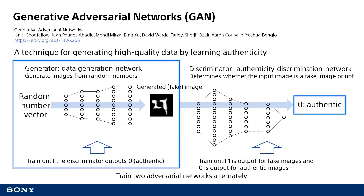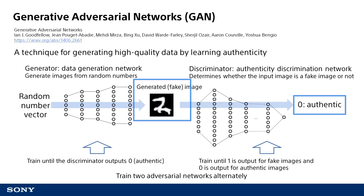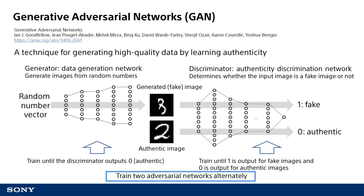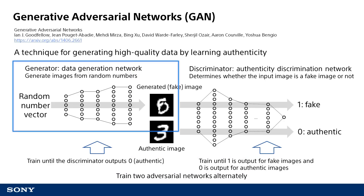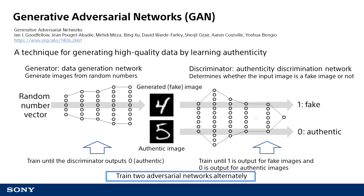Then we train the generator to output images that the discriminator determined to be authentic. This results in the generator being able to generate images that cause the discriminator to make false determinations, even though the discriminator is now able to do its job much better. By repeating this process several times, the generator will gradually be able to generate images of realistic handwritten digits indistinguishable from real images. This is the framework by which we train image generation systems. Because of this iterative process in which performance is continually improved by making the networks compete, you can understand why this technique is called generative adversarial networks.